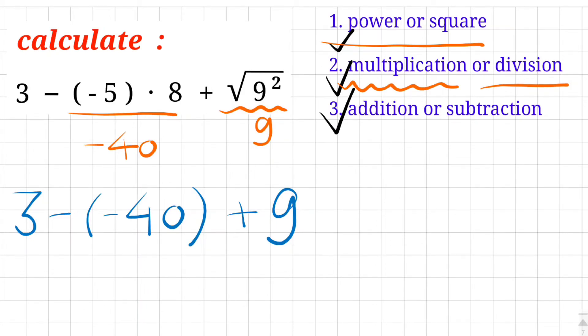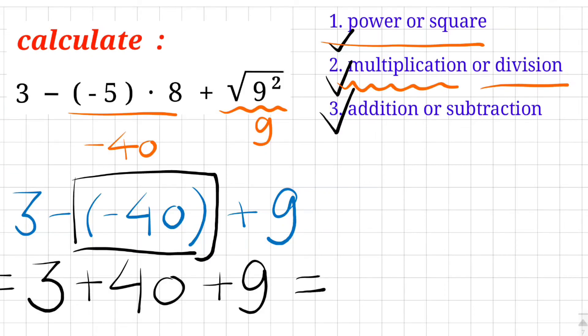And then calculate it. 3 minus minus 40. Here is minus 40 and here is a bracket. So 3 minus minus 40, what is it? That is 3. Then minus minus 40 is plus 40. And then plus 9. It's very easy. 3 plus 40 is 43. 43 then plus 9 is 52.